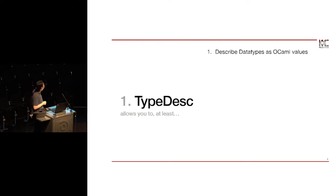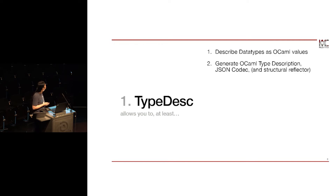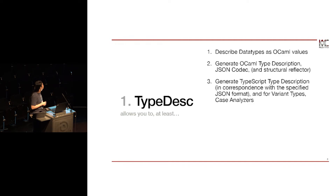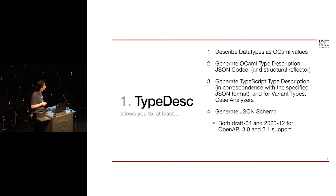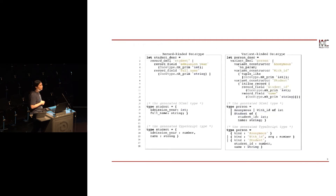The first example talks about type description. We describe data types as OCaml values, and we can generate OCaml type definitions as well as JSON codecs. We can also generate TypeScript type definitions corresponding to the specified JSON format. For variant types, we also generate case analysis, because in TypeScript we can do pattern matching. We can also generate JSON schema from the data type descriptions.